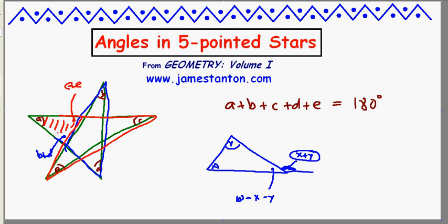And there we have it. If we look at this triangle right here with angle A, we say that angle A plus angle C plus E plus angle B plus D correspond to the three angles of a triangle. That must be 180 degrees.